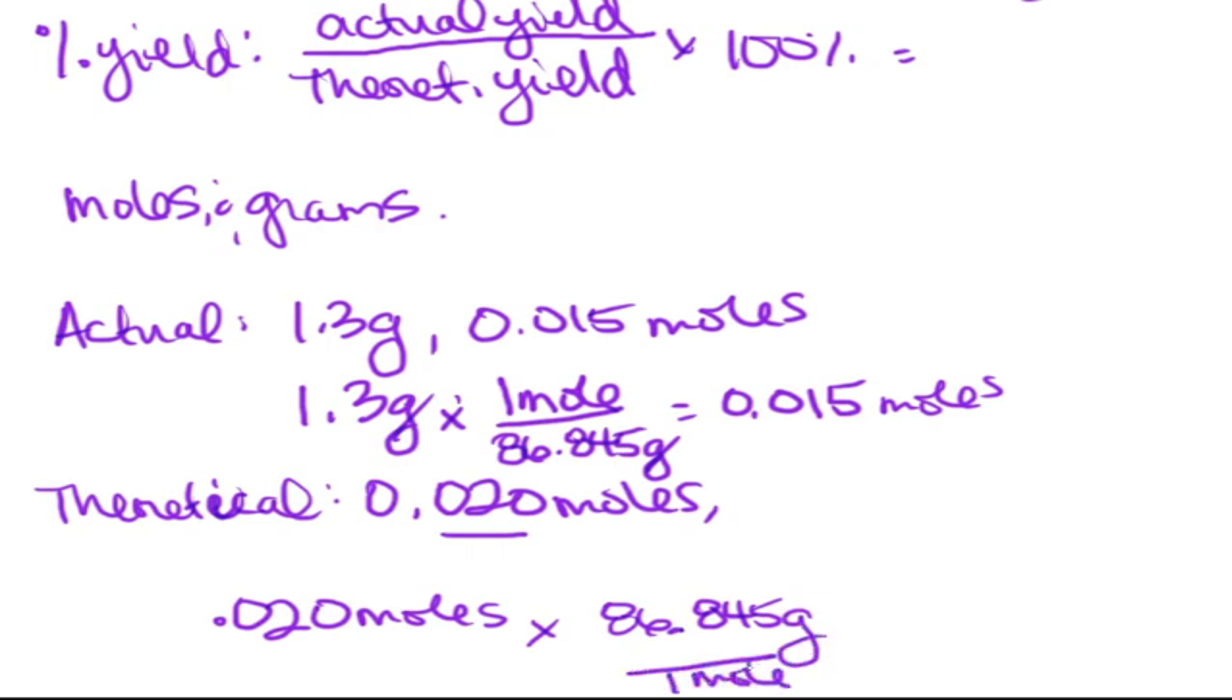And what about grams of theoretical yield based on this? So you can find that by multiplying by the molecular weight, 86.845 grams over mole, and moles cancel, that gives us 1.737 grams as our theoretical yield.